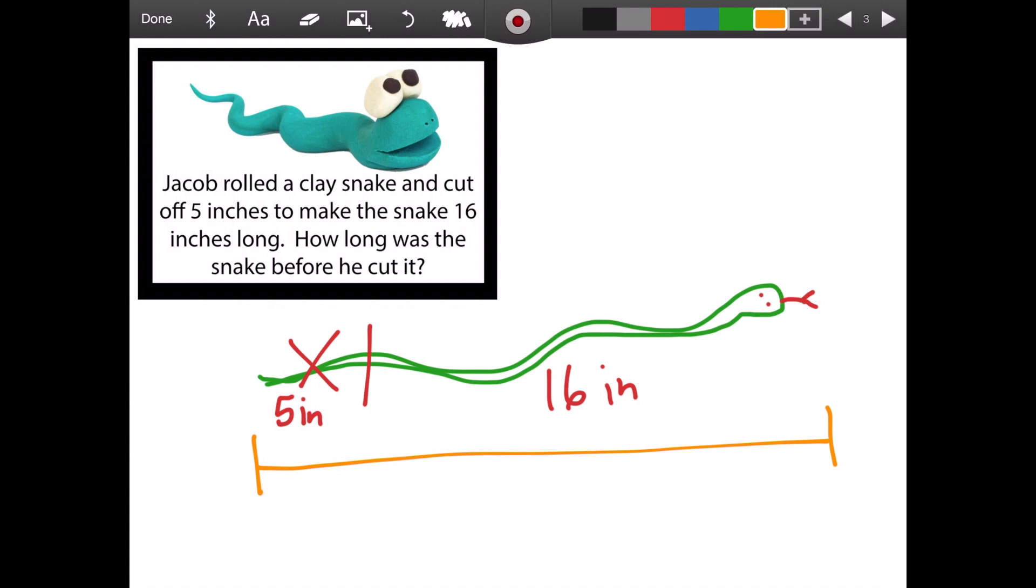So how long was the snake at the beginning? To solve that, we could add these two parts together. What's left and then what was cut off. 16 plus five is 21. How long was the snake before he cut it? 21 inches long.